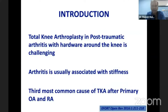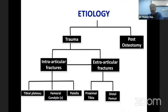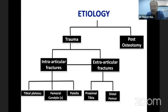Total knee arthroplasty in post-traumatic arthritis with hardware around the knee is challenging. The arthritis is usually associated with stiffness. Post-traumatic arthritis is the third most common cause of total knee replacement after primary osteoarthritis and rheumatoid arthritis. This trauma could be due to various mechanisms or it could be due to osteotomy.